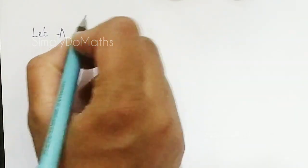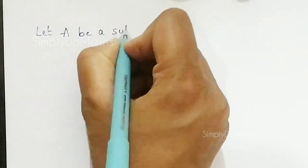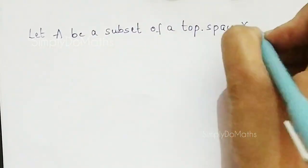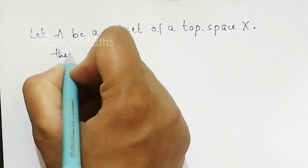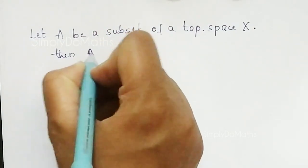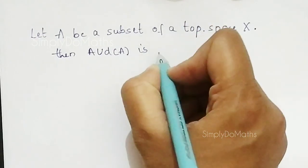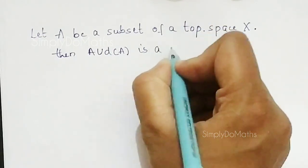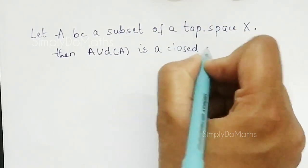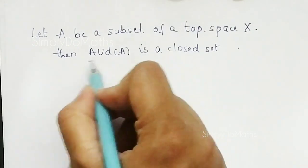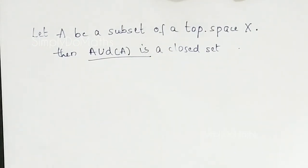Hello everyone. Let us consider a subset of a topological space A. Then A union the derived set of A is always a closed set. We need to prove that A union the derived set of A is closed.